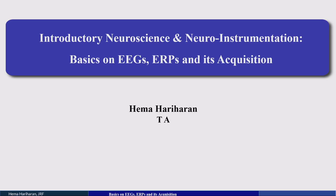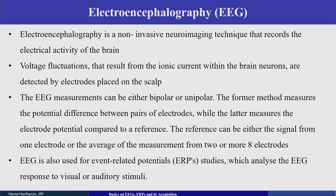Hello everyone. As part of the introductory neuroscience and neuro instrumentation course, I will give a basic overview about EEGs, ERPs, how they are acquired, and other requirements for doing an EEG recording. First of all, what is an EEG? It is called electroencephalography. Our brain has various lobes that show different electrical activity, and the process of acquiring that electrical activity is called EEG.